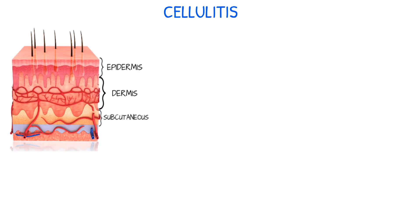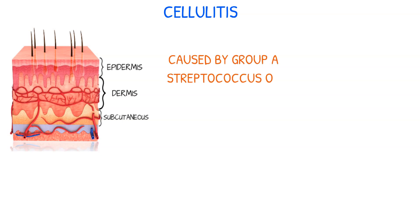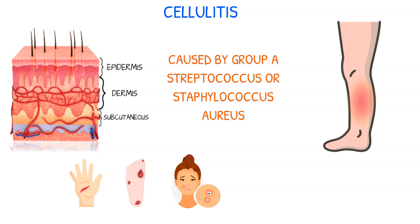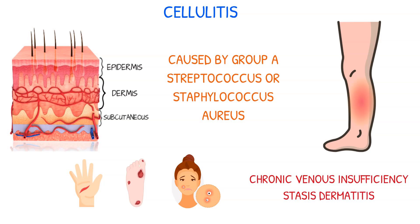Cellulitis is a common infection that affects the epidermis, dermis, and subcutaneous layers. This condition is often caused by Group A streptococcus or Staphylococcus aureus. It can occur as an extension of a skin wound, an ulcer, or from furuncles or carbuncles. The infection is usually located in the lower extremities and can be associated with other diseases including chronic venous insufficiency and stasis dermatitis.